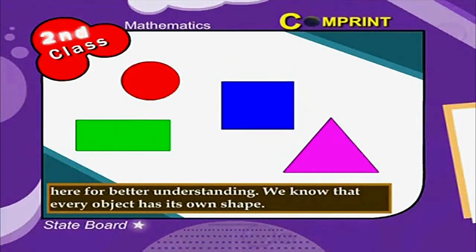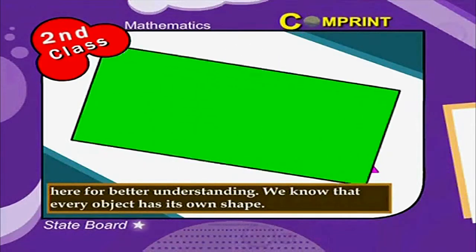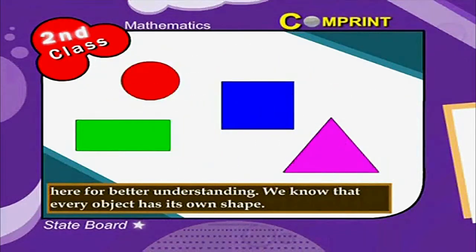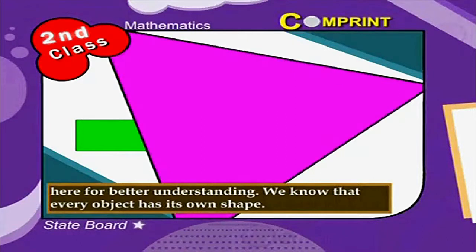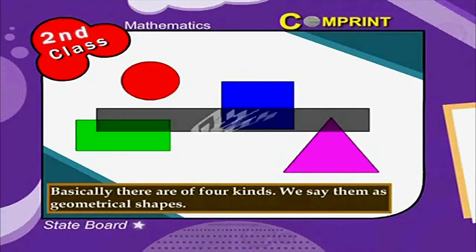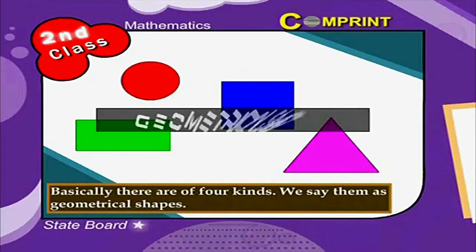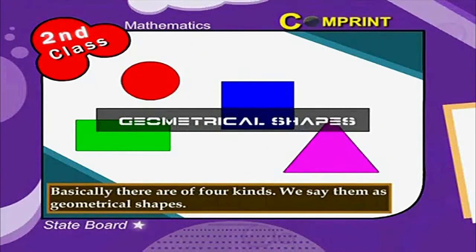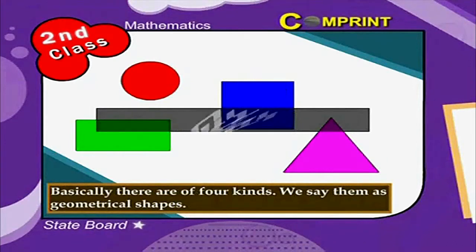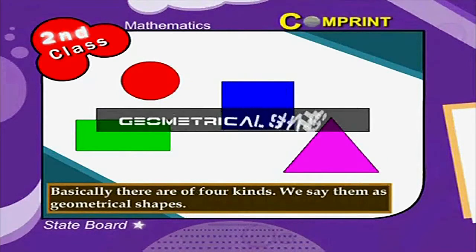We know that every object has its own shape. Basically, they are of four kinds. We call them geometrical shapes. Have a look at them.